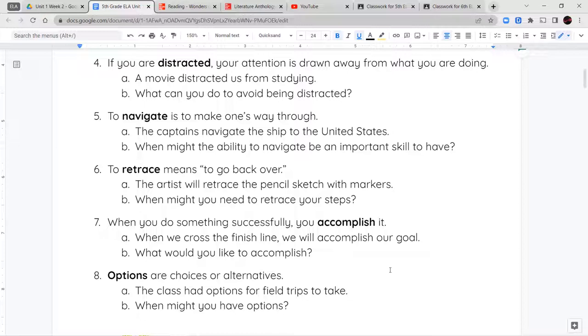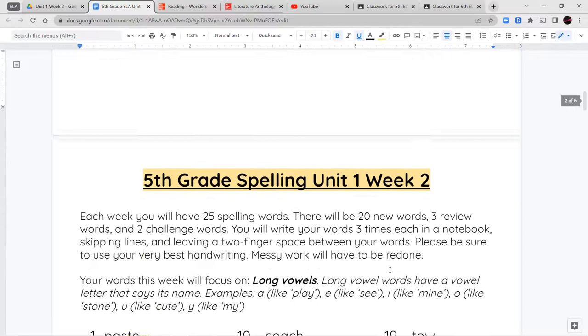And your last word is options. Options is just another word for choices or alternatives. So if I say you have the option between spaghetti or pizza for dinner, those are your two choices, your two options. The class had options for field trips to take. And when might you have options?